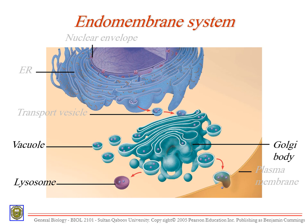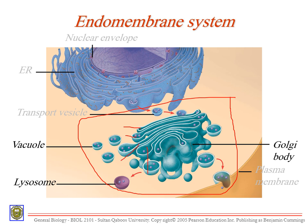The Golgi body is described as an unconnected group of sacs called cisternae. Each sac is separated from the other — they are not connected. Why? Because each sac has a different job, a different set of enzymes. If they were all connected, all the enzymes would be mixed together. Every sac has a separate set of enzymes and chemicals so that it can do a different kind of modification — job one, job two, job three, and so on.